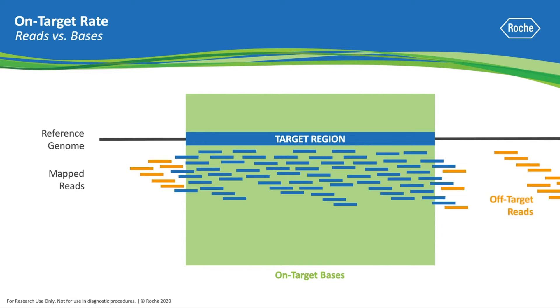The orange reads contain no bases that overlap the target region, and are considered off-target reads. Thus, the greater number of reads that map to only the regions of interest, the higher the on-target rate, and the greater the efficiency of the target enrichment.